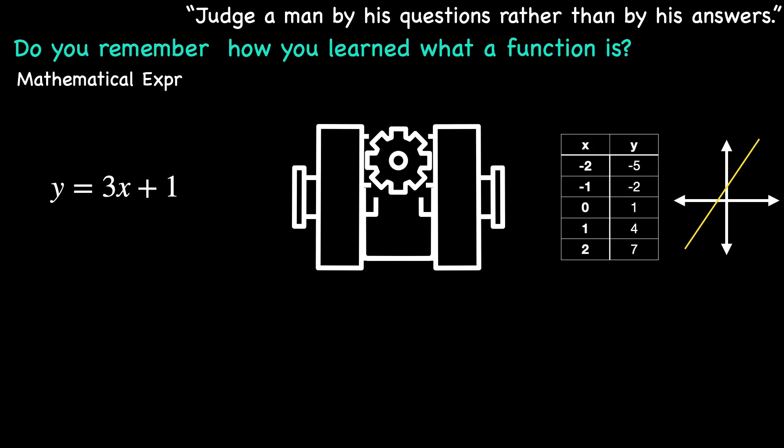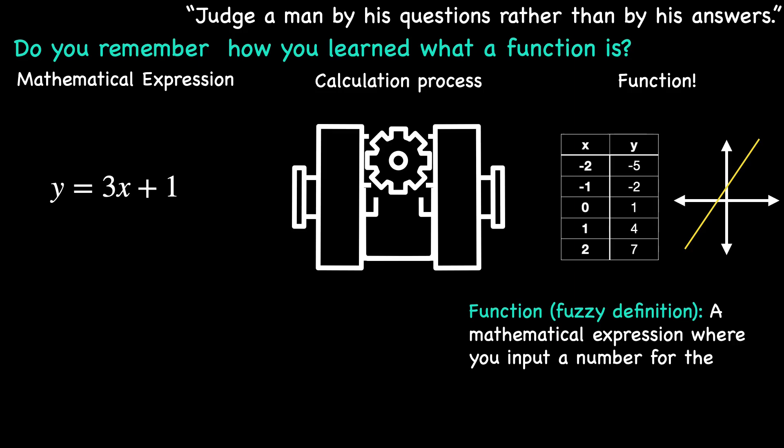As Slim continued his studies, he encountered a variety of functions: polynomials, trigonometric functions, exponentials, and logarithms. Even though he didn't have a formal definition, the concept of a function seemed pretty straightforward. To Slim, a function was simply a mathematical expression where you input a number for the independent variable and get a corresponding output for the dependent variable.